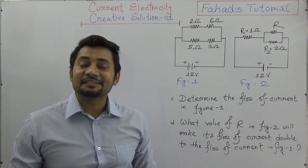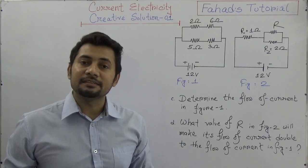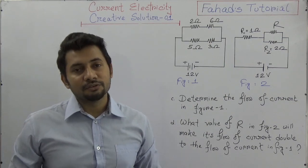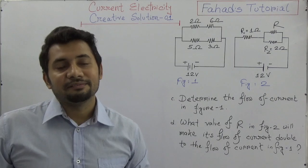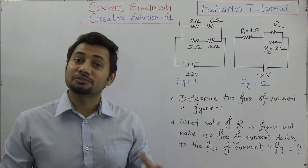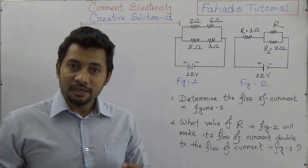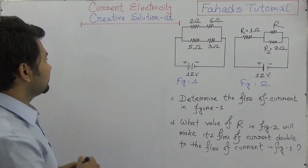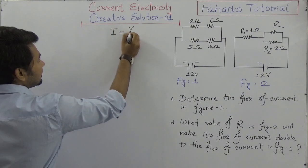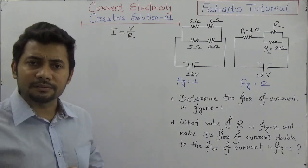Hello everyone, welcome to another class on current electricity. In this video we're going to solve creative questions. Previously I explained Ohm's law, electric circuits, some symbols, how to draw electric circuits, and the basics of Ohm's law. According to Ohm's law the equation is I equals V divided by R.